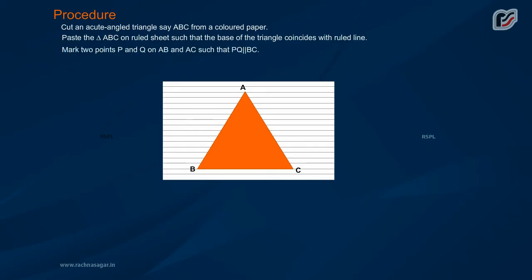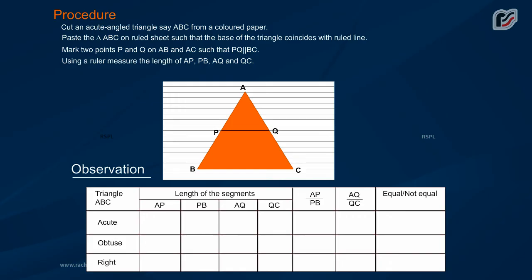Mark two points P and Q on AB and AC such that PQ is parallel to BC. Using a ruler measure the length of AP, PB, AQ and QC.